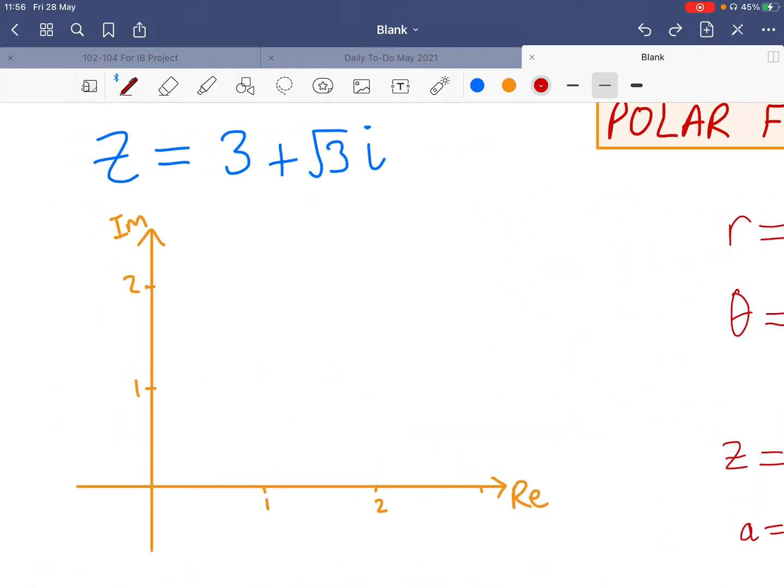So what we're going to start off with here is to just graph it on an Argand diagram. As you may have been familiar with already, we have 3 on the real axis, root 3 on the imaginary. So that's going to be about 1.7, so around there. So that's graphed.